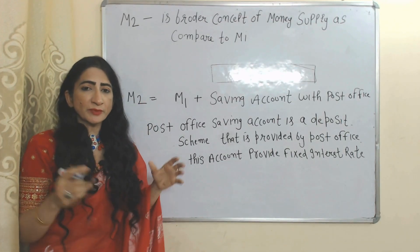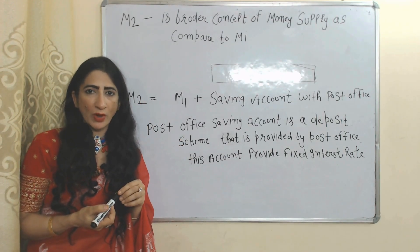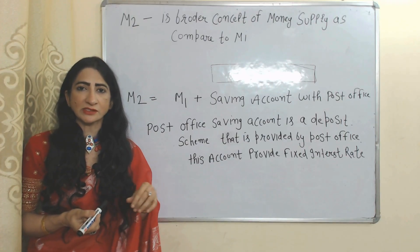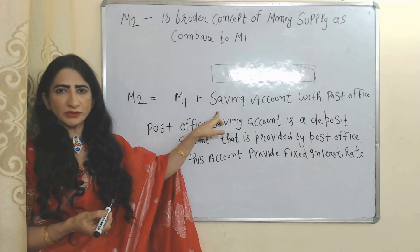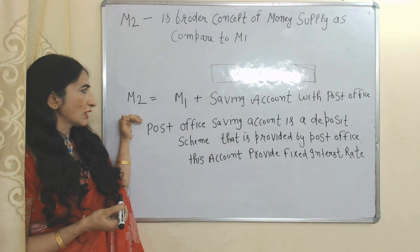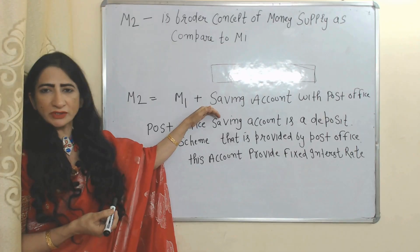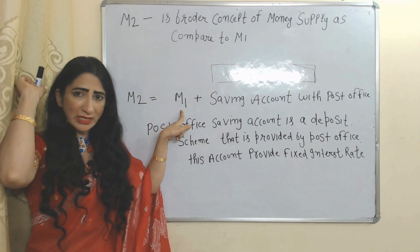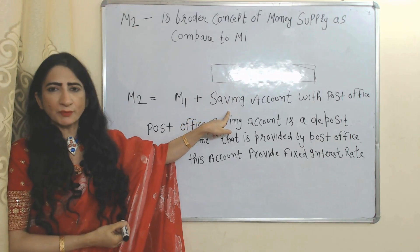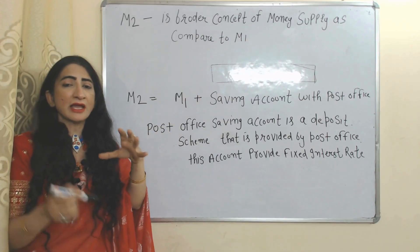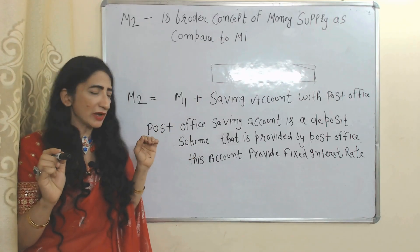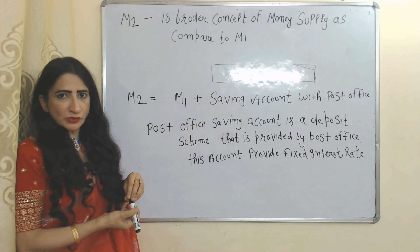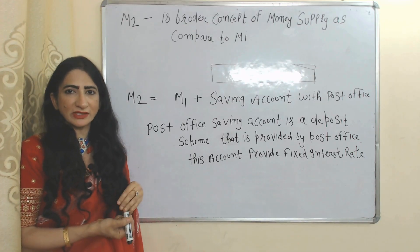The second measure is M2. M2 is a broader concept compared to M1, as it consists of all components of M1 plus savings accounts with the post office. So M2 equals M1 plus savings account with post office. The savings account with the post office is a deposit scheme provided by the post office that offers a fixed interest rate.